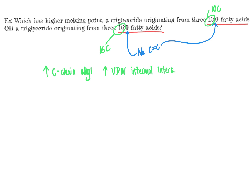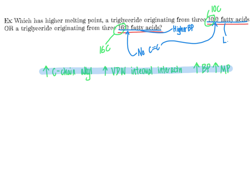Increased intermolecular interactions lead to an increased melting point. Applying that logic here: the longer carbon chain results in a higher melting point. Therefore, the 16:0 fatty acid-derived triglyceride has the higher melting point, while the 10:0 fatty acid-derived triglyceride has the lower melting point.